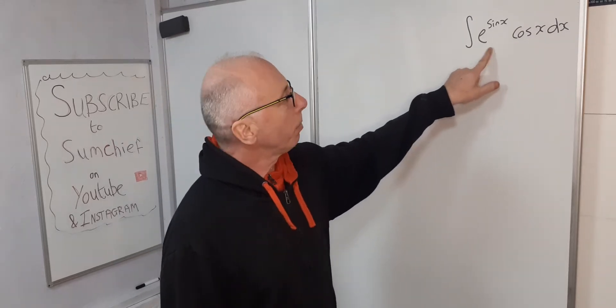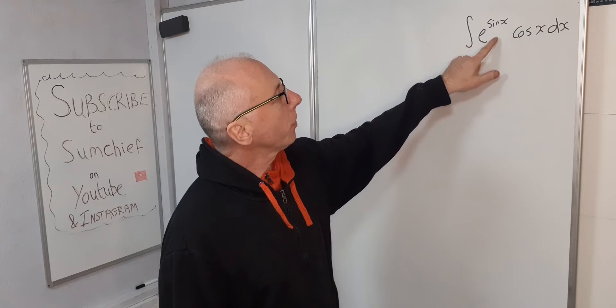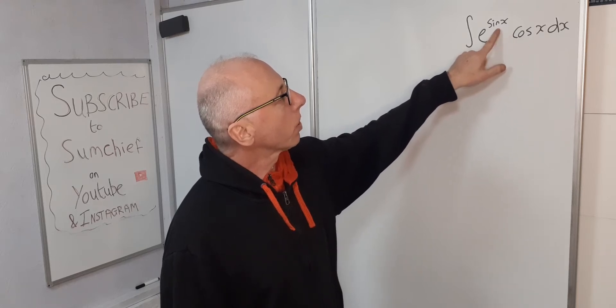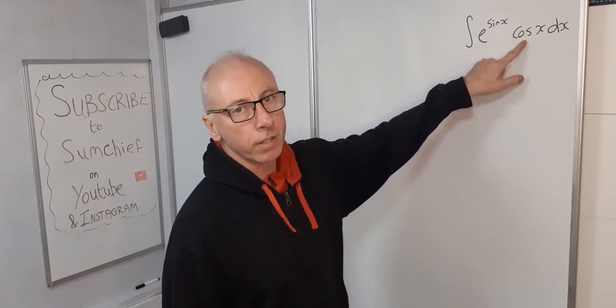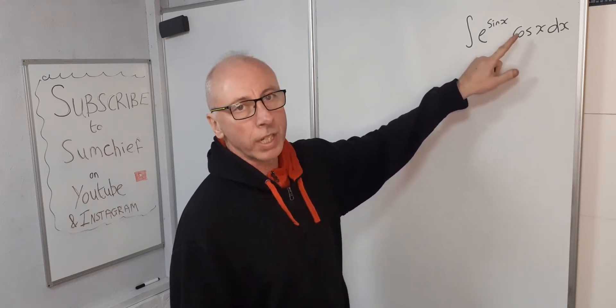So integration by parts is a possibility but be a bit messy. Better off using a u sub because it looks like we've got sine x and cosine x. Sine and cosine always go well together when looking for one to cancel out.